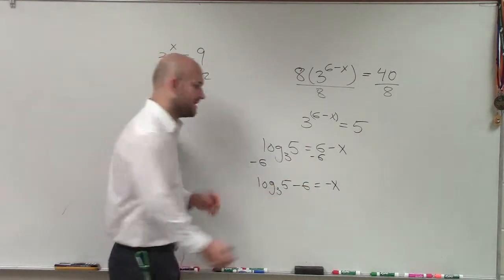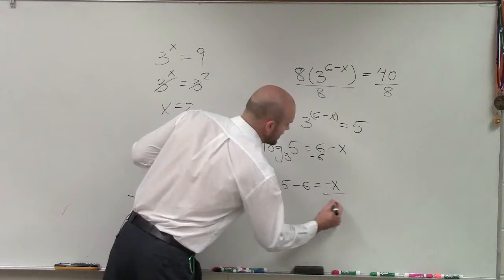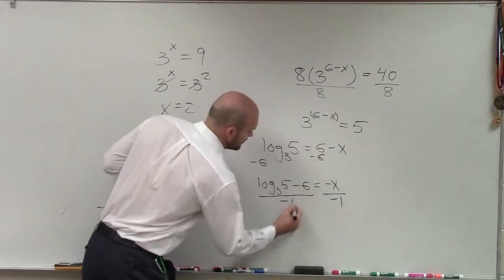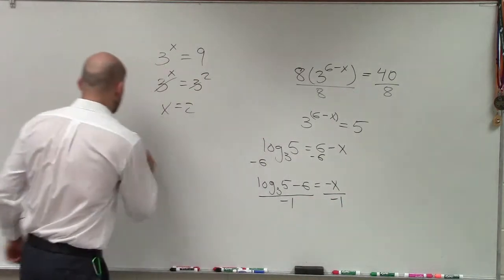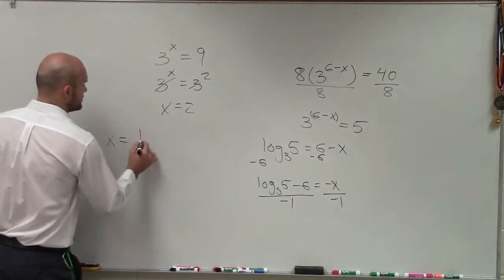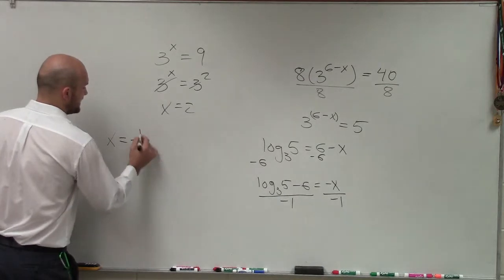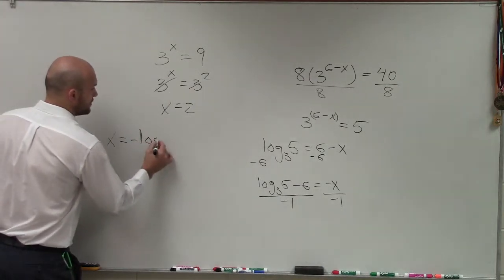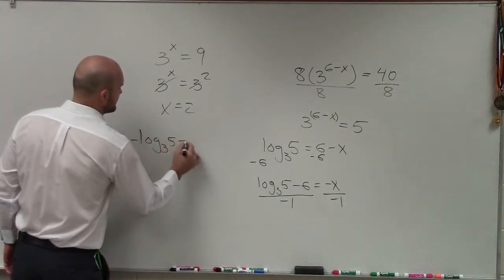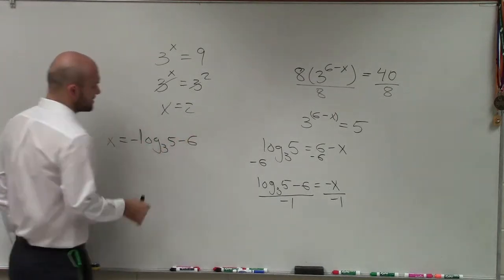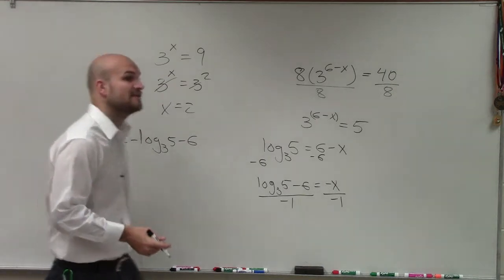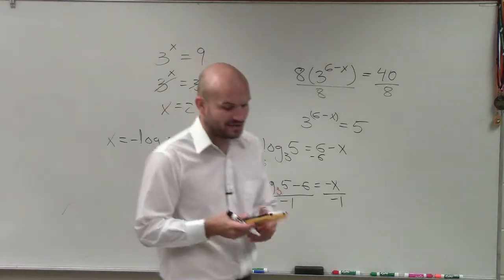Then let's get rid of the negative by dividing by negative 1. So my final answer is x equals negative log base 3 of 5 minus 6. Now I just need to figure out that value.